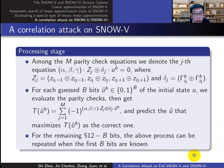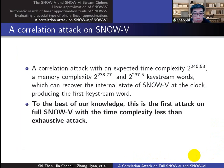For the remaining bits, we can recover them by repeating the same process. Thus, we launch a correlation attack on SNOW-5. For the best of our knowledge, this is the first attack on full SNOW-5, with the time complexity less than exhaustive key search.